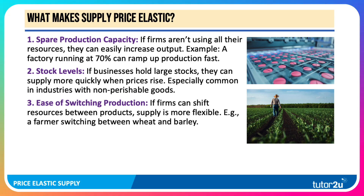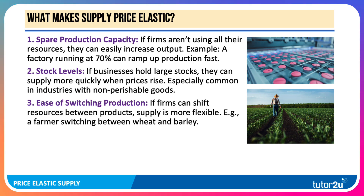The ease of switching production is another key factor. If a business can shift their resources between products, supply becomes more flexible. A farmer might be able to switch between different crops — wheat and barley, for example — between growing seasons.